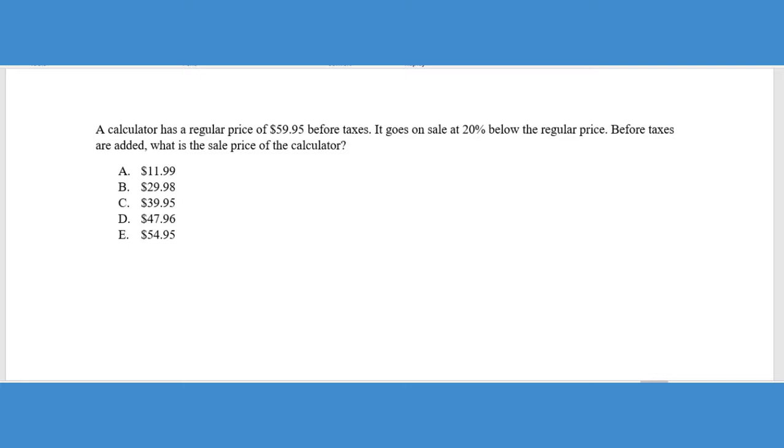Okay. In this next problem, we have a very classic percentage problem where we have either a sale or a discount or a markup or taxes or a combination of all of that. So make sure you're comfortable with these types of problems. It says a calculator has a regular price of $59.95 before taxes. It goes on sale at 20% below the regular price before taxes are added. What is the sales price of the calculator? So we have before taxes and before taxes. So basically taxes is thrown in there as kind of a redirect. Taxes is not even important in this problem. And if we just scratched out the word before taxes, it would not change this problem at all. So just kind of keep that in mind.